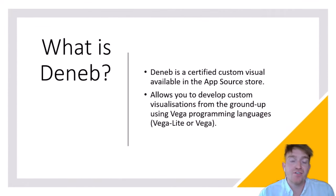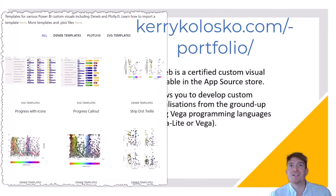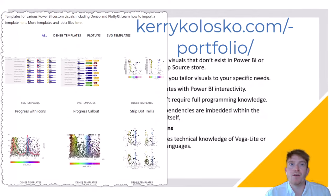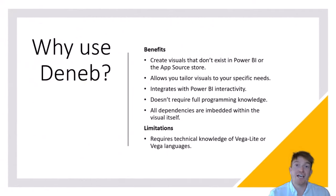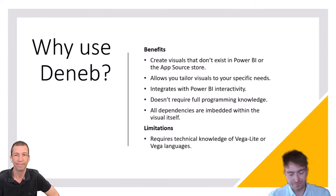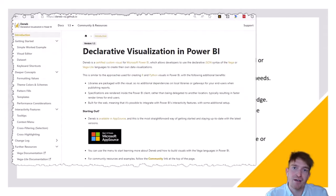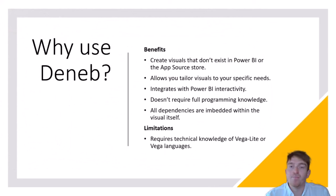So what is Deneb? Deneb is a certified custom visual available in the AppSource store. This visual allows you to develop custom visualizations from the ground up using Vega programming languages known as Vega-lite or Vega. The benefits are that it gives you the ability to create something that maybe doesn't exist in Power BI currently, and it allows you to tailor visualizations to your specific needs. The visual itself is free — no other licensing required, you just download it and you're ready to go. The limitation is that there is a bit of a learning curve. You'll need some knowledge of Vega-lite and Vega, and at first it can be a little daunting. But once you get momentum, it really opens up a world of possibilities.